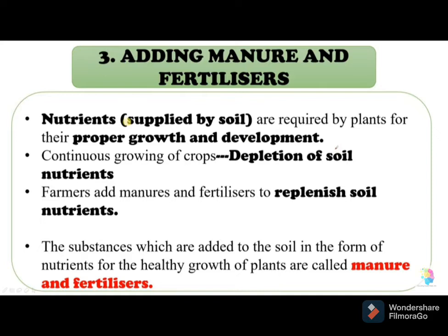Farm yard manure includes all waste from the farm, such as cattle dung and urine, leftover food or feed, and waste from cattle sheds. Compost is manure prepared by degrading waste materials like livestock excreta, vegetable waste, sewage waste, eradicated weeds, and other organic waste.